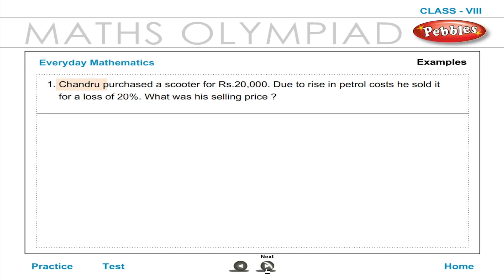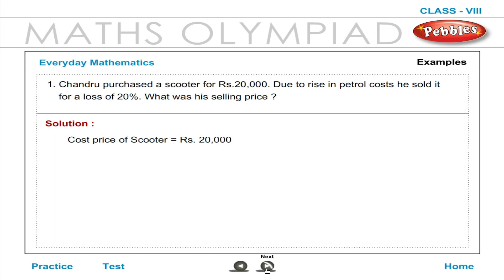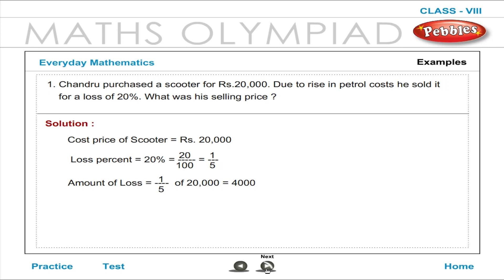Example: Chandru purchased a scooter for Rupees 20,000. Due to rise in petrol costs, he sold it at a loss of 20%. What was his selling price? Solution: Cost price is Rupees 20,000. Loss percent is 20%, which equals 1 by 5. Amount of loss equals 1 by 5 of 20,000, which equals Rupees 4,000. Selling price equals Rupees 20,000 minus Rupees 4,000, which equals Rupees 16,000.